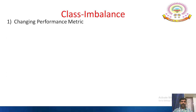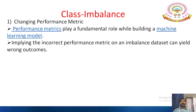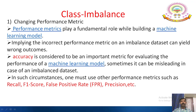Changing the performance metric: performance metrics play a fundamental role while building a machine learning model. Applying the incorrect performance metric on an imbalanced dataset can yield wrong outcomes. Accuracy is considered an important metric for evaluating performance, but it can be misleading in the case of imbalanced data. In such circumstances, we must use other performance metrics such as recall, F1 score, false positive rate, and precision.